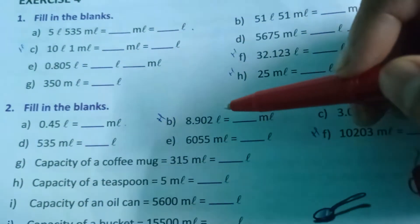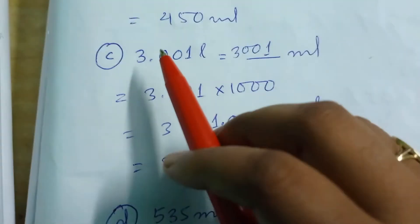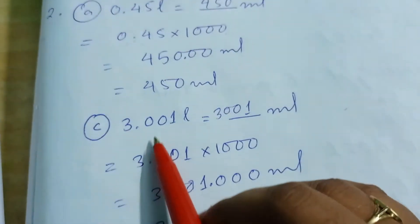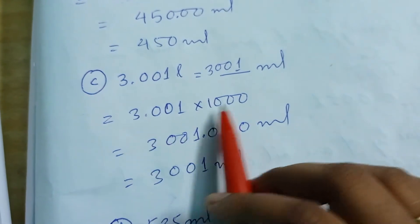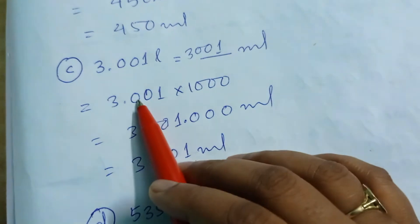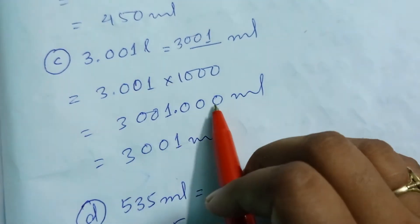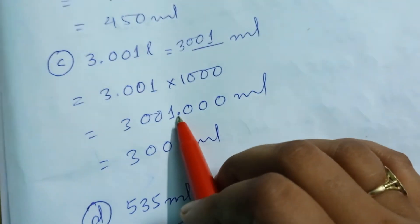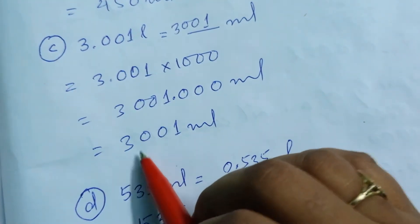Question B — 8.8902 liter to milliliter — is homework for you, similar to how you did A. For question C, it's the same: 3.001 liter to milliliter. Multiply by 1000 to get 3001.00, then since the point was before three numbers, count three from the back: one, two, three — put the point before three digits. The answer is 3001 ml, because after the decimal the zeros have no value.